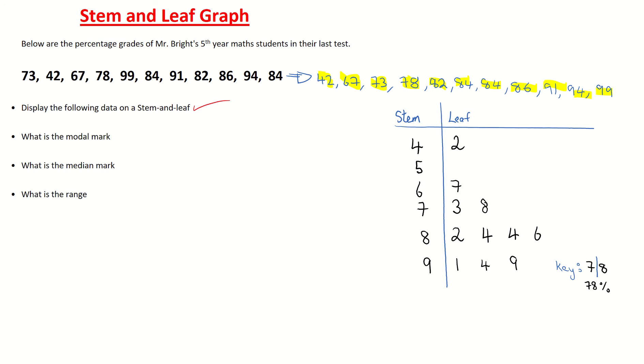Modal mark - that's the same as the mode. And we know that mode is the most popular number. And if we come to our table or the list of numbers, you will see that the mode is 84. It appears twice. And you can see it from my stem and leaf graph as well. It appears twice. So my mode in this question is going to be 84.